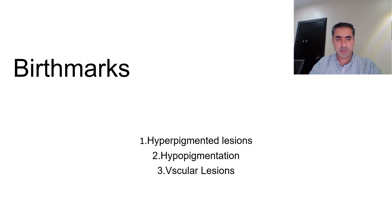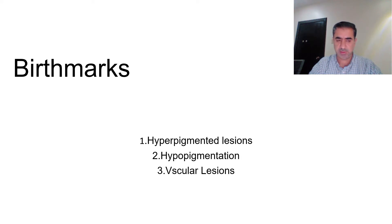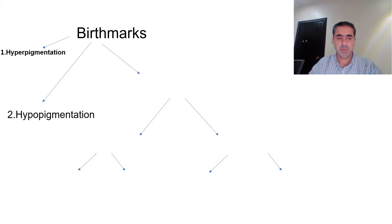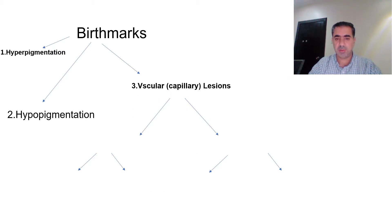This is the second part of our talk on neonatal skin rashes. It includes hyperpigmented lesions, hypopigmented lesions, and vascular lesions. Birthmarks in general can be divided into three parts: hyperpigmentation, hypopigmentation, and vascular or capillary lesions.